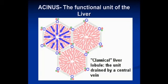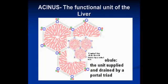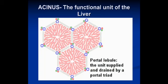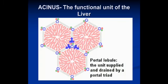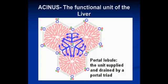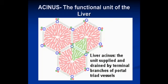Deoxygenated blood (blue) and bile flow towards the portal triad. The liver acinus is the unit supplied and drained by terminal branches of the portal and triad vessels.